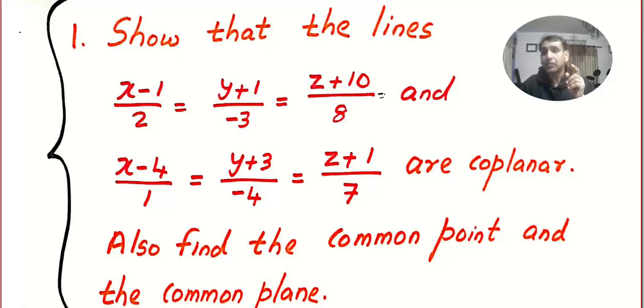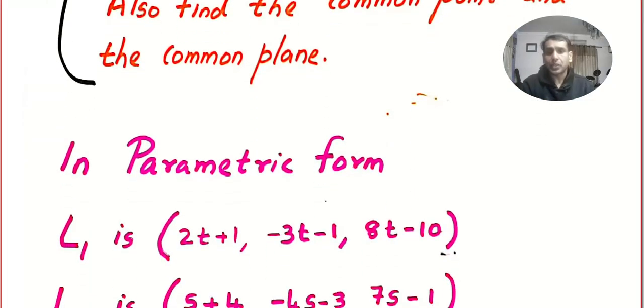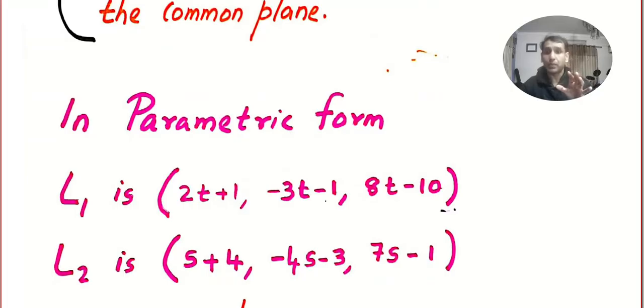Point number one: we are going to convert this into parametric form. Anyway, this is obvious that the directions are not proportional, so they are not parallel. Now there are two possibilities: either they will intersect or they are skewed. So the first thing to do, convert it into parametric form. I am sure you have watched the videos previously. You know how to convert lines into parametric form. Now look at the interesting part.